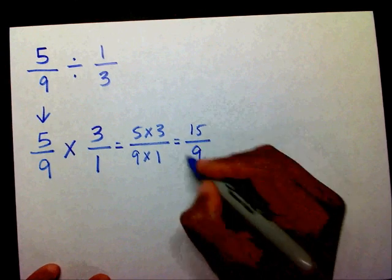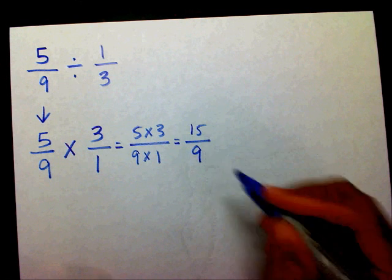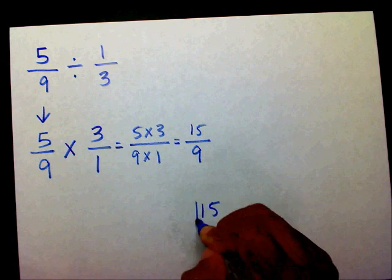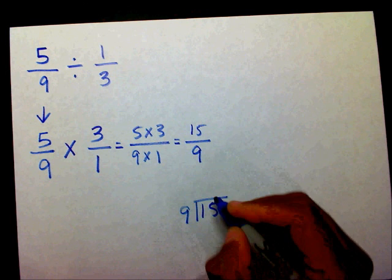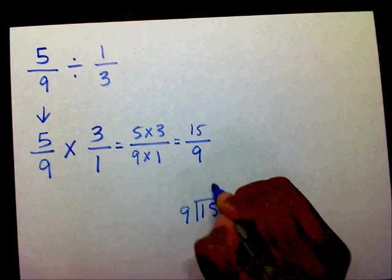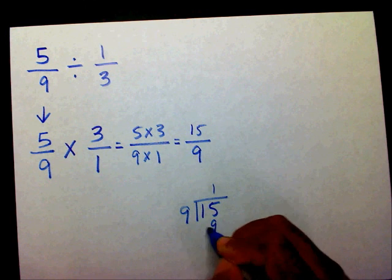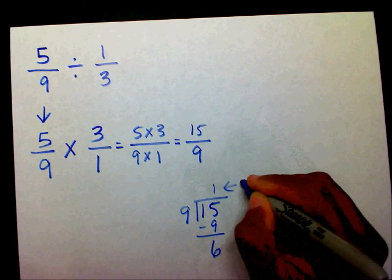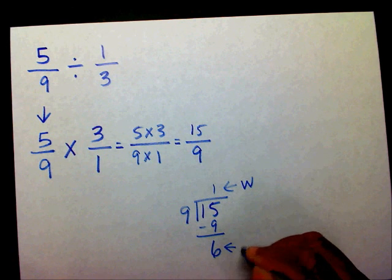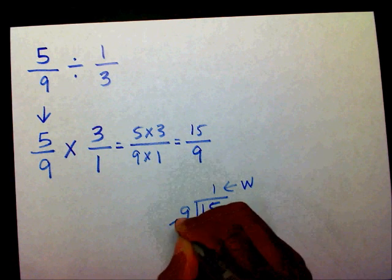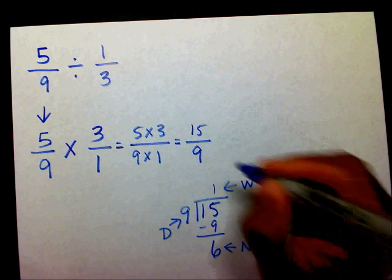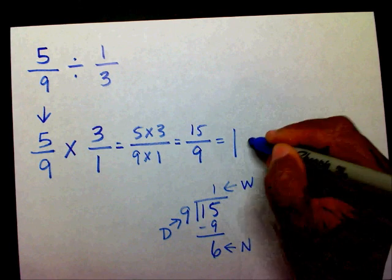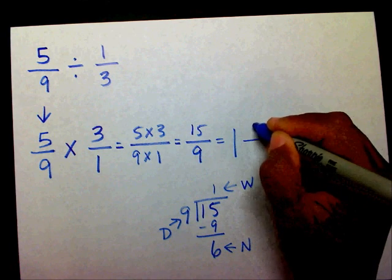I have an improper fraction here, I need to change that to a mixed number. Fifteen divided by nine: nine goes into fifteen one time. This is my whole number, this is my numerator, that's my denominator, so I have one and six-ninths.